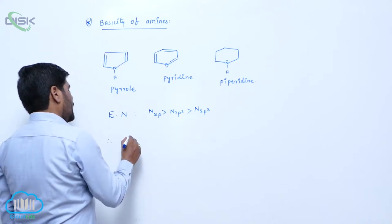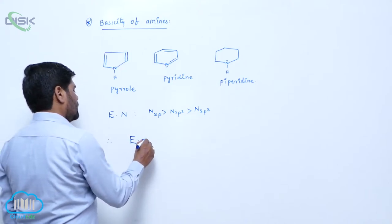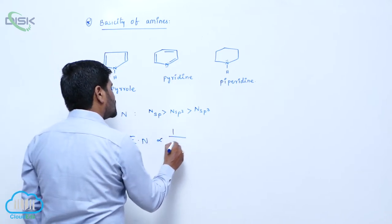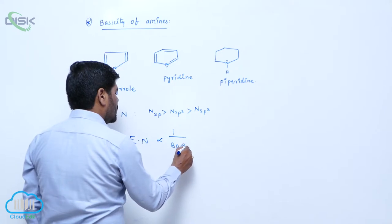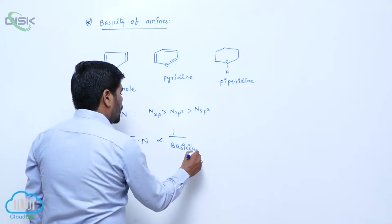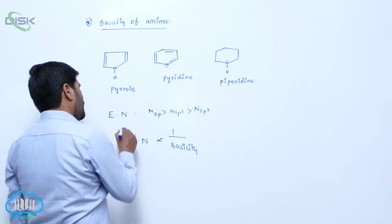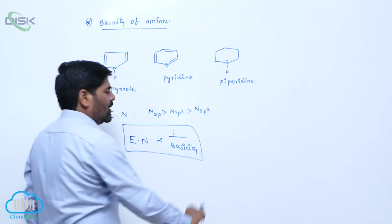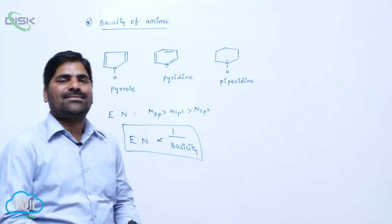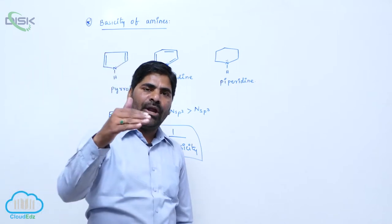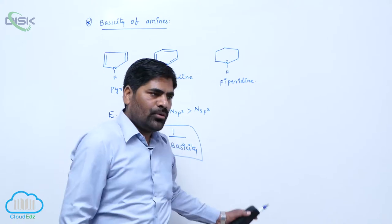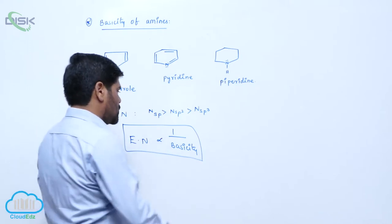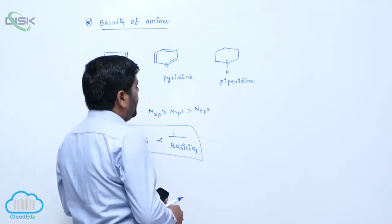Electronegativity is inversely proportional to the basicity of amines. If the electronegativity is more, basicity decreases. If electronegativity of nitrogen increases, it retains the lone pair of electron, so donating capacity decreases and basic nature decreases.